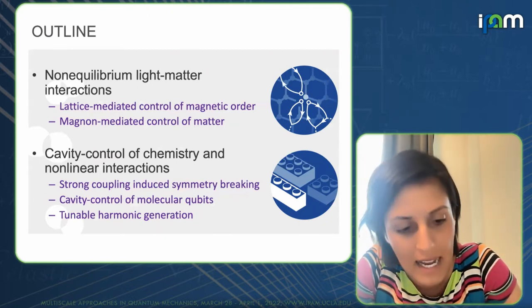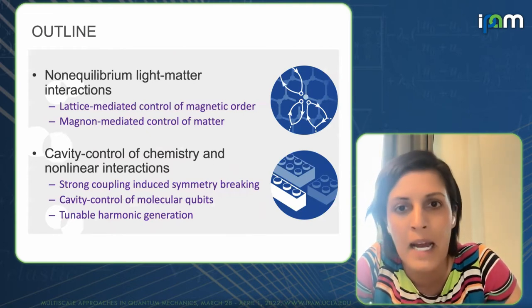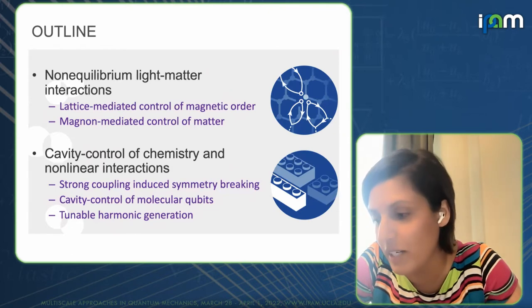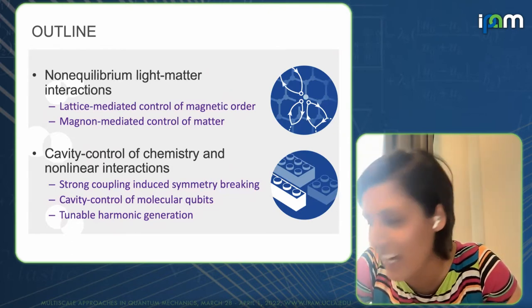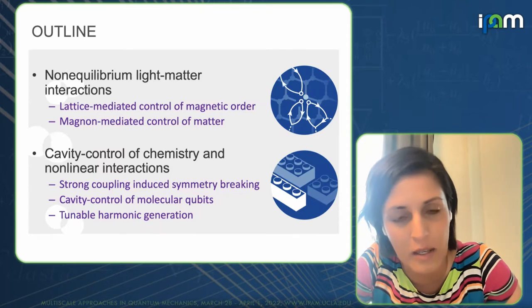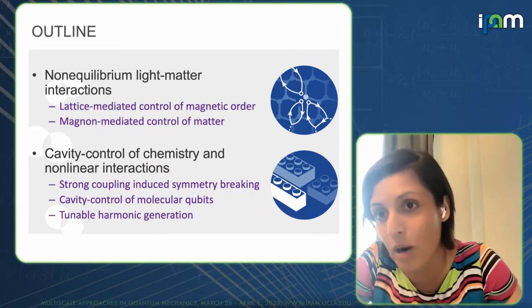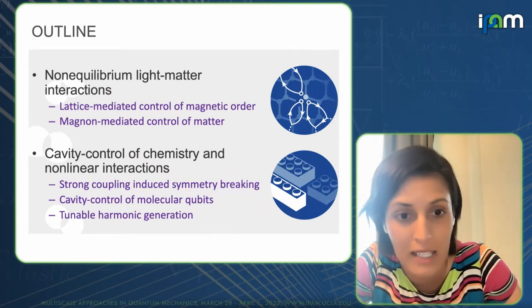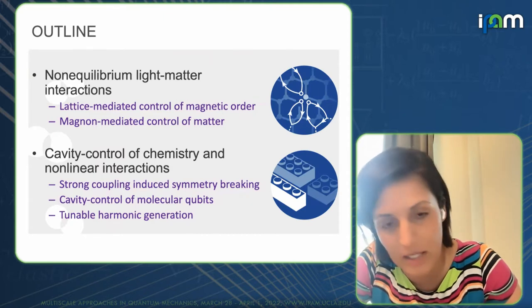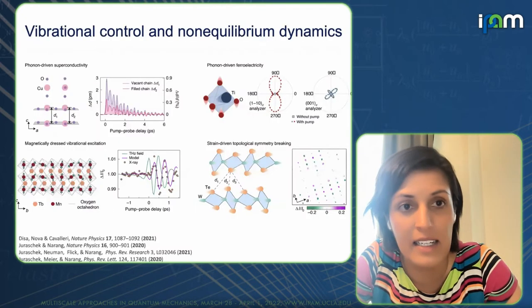That brings me to the outline of my talk. Since I have about 40 minutes I'll try to be efficient. First, I want to cover the regime where we're driving the system very far out of equilibrium — particularly to control magnetic order. This is work I haven't talked about in too many contexts, so for those who've heard me give a talk over the last year and a half, this will be new. Then I want to emphasize work on cavity control of nonlinear interactions, cavity control of molecular qubits, and the problem of describing entanglement across cavities that contain molecular qubits.